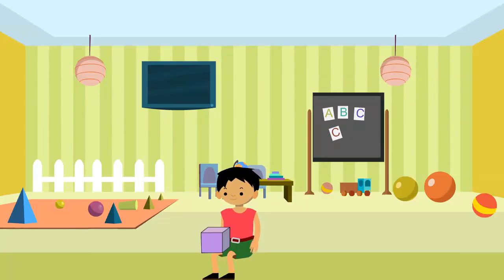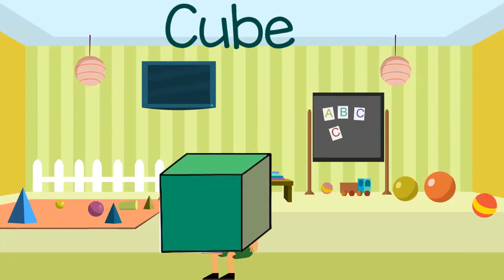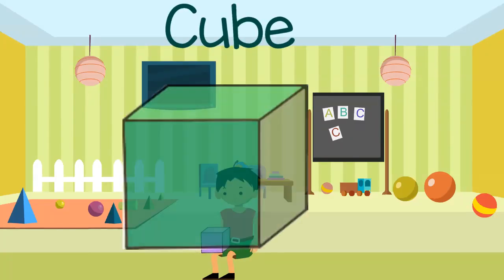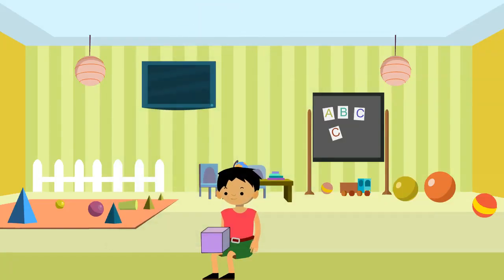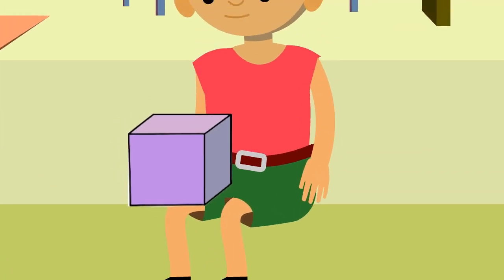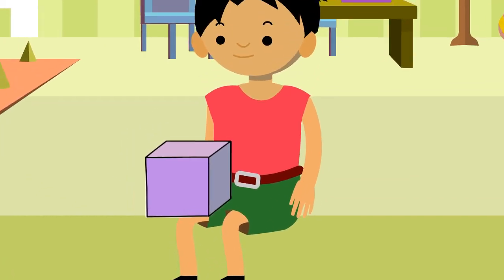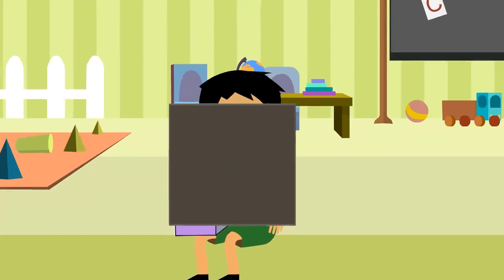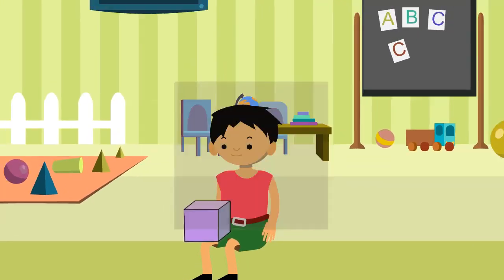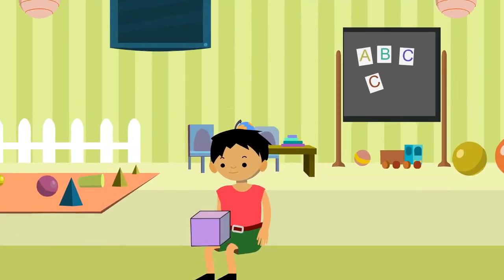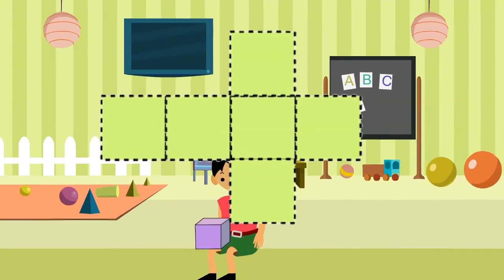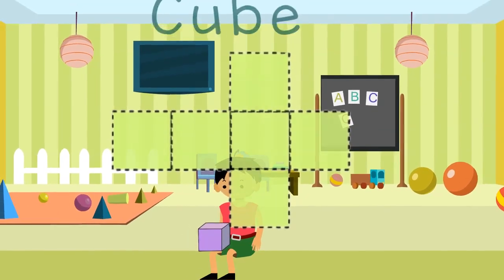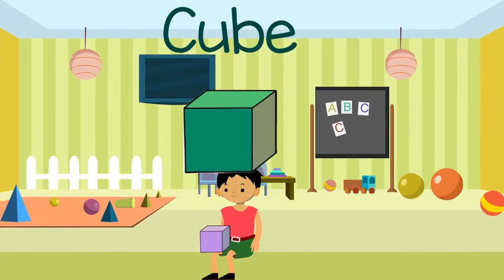I am playing with this block. It is a cube. What shape do you see here? Look closely. Yes, it is a square. Six squares make up my cube block.